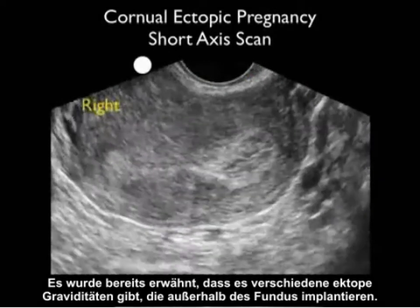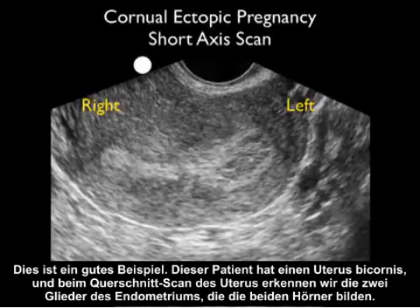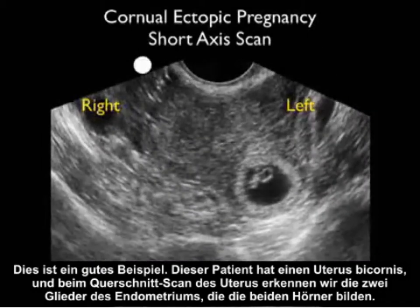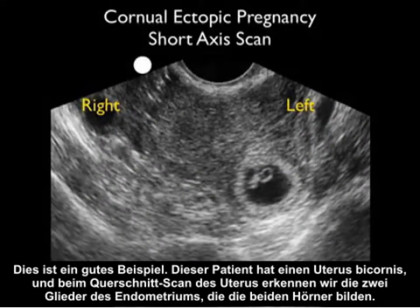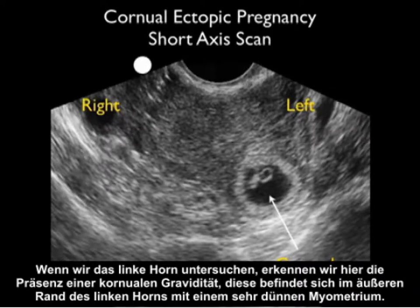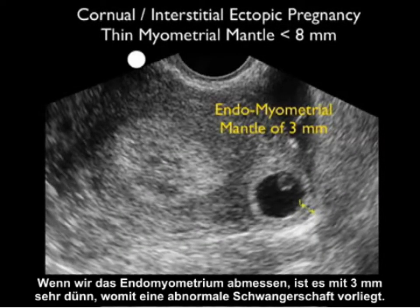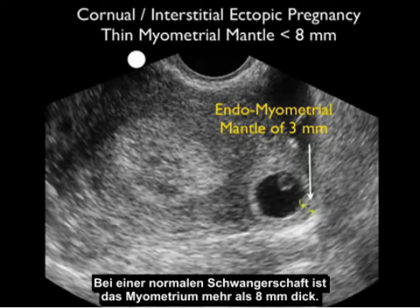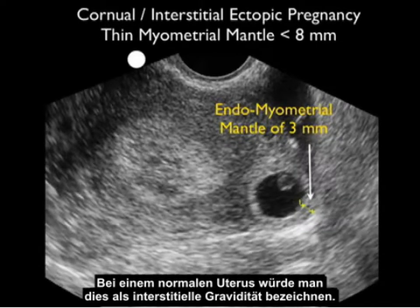There are variants of ectopic pregnancies that implant outside the fundal region of the uterus in an aberrant location. This patient has a bicornuate uterus, and as we scan in a short axis plane up the uterus, we notice the two limbs of endometrium forming two distinct cornua. Going up the left cornua, we see a corneal ectopic pregnancy located way out to the left with a very thin myometrial mantle. Measuring the endomyometrial mantle with calipers, it is very thin at three millimeters, defining an abnormal pregnancy — a normal pregnancy should have a myometrial mantle greater than eight millimeters. In a normal uterus, this would be known as an interstitial pregnancy.